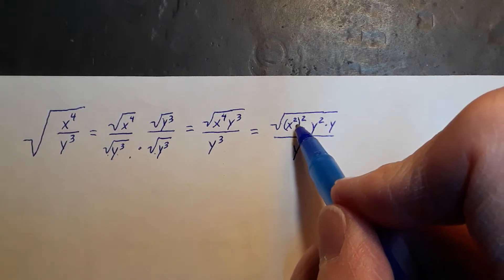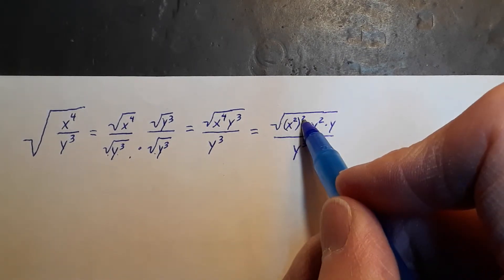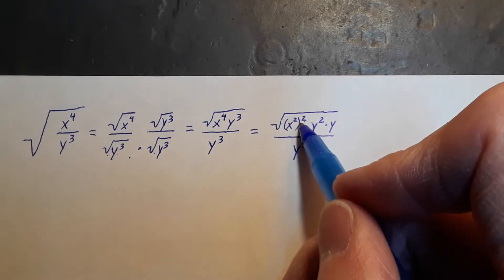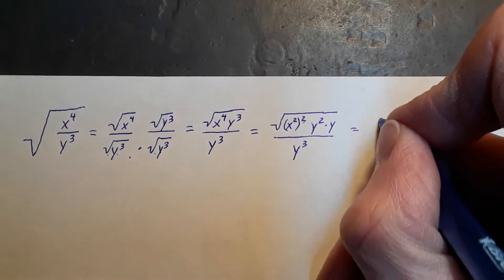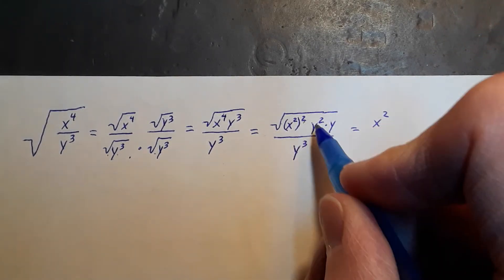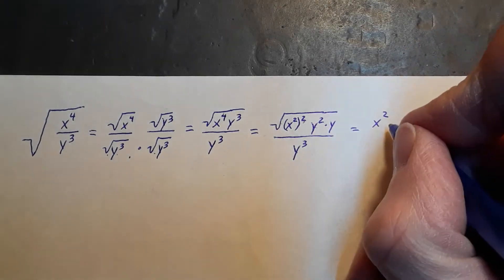And so this x squared squared will be kicked out because the square root is acting as an inverse on this. So it's going to give me x squared on the outside. The y is going to get kicked out as the square root acts on the square.